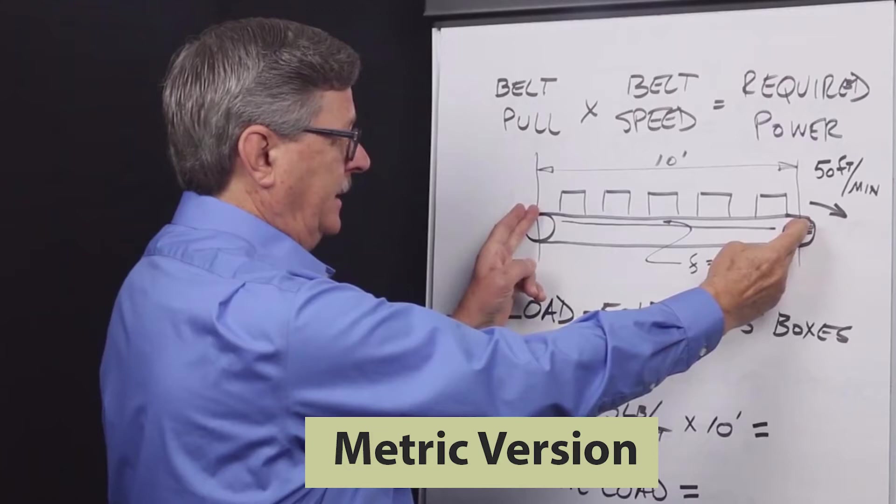In metric units, since load is often expressed in units of mass, for example 50 kilograms or one metric ton which equals 1,000 kilograms, we need to convert units of mass into units of force to calculate required belt pull and subsequently required belt drive power.